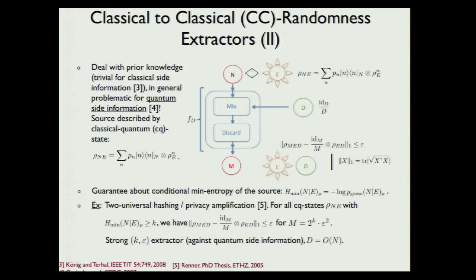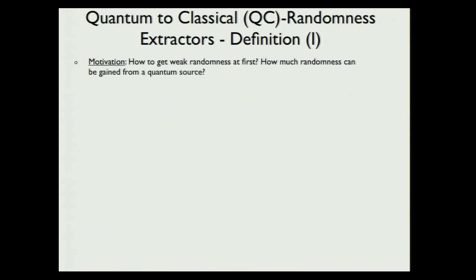Now let's come to quantum-to-classical randomness extractors. The basic idea is to make the input quantum. Before we had a classical input system N and wanted to extract randomness; now the idea is to start with a quantum system. The motivation is: how do we get this weak randomness in the first place? One way is to take a quantum source and do measurements on it, because in quantum mechanics we can get real randomness out. So I want to start with a quantum system and see how much randomness can be extracted.